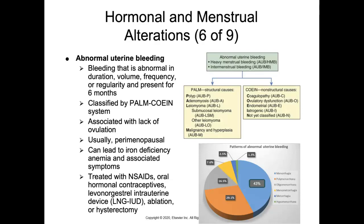Menometrorrhagia is heavy, irregular menstrual bleeding — a combination of intermenstrual and heavy menstrual bleeding. The specific term for intermenstrual bleeding is metrorrhagia, which can be due to uterine malignancy, cervical erosions, endometrial polyps, or estrogen therapy side effects. Hypomenorrhea is deficient menstrual flow, caused by endocrine or systemic disorders, or partial obstruction by the hymen or a narrowing of the cervical os.